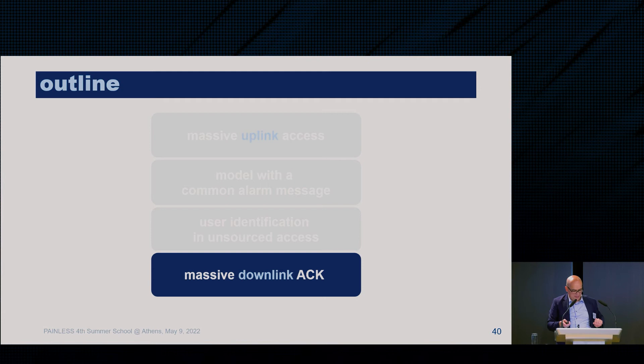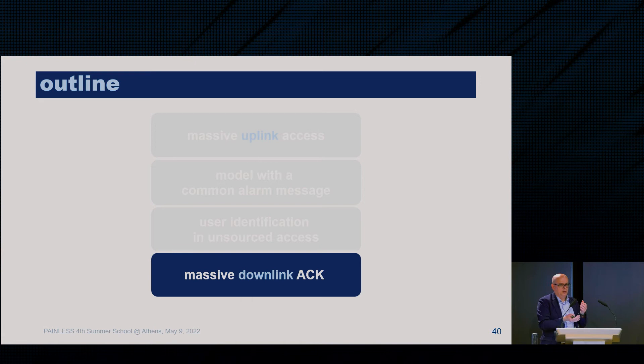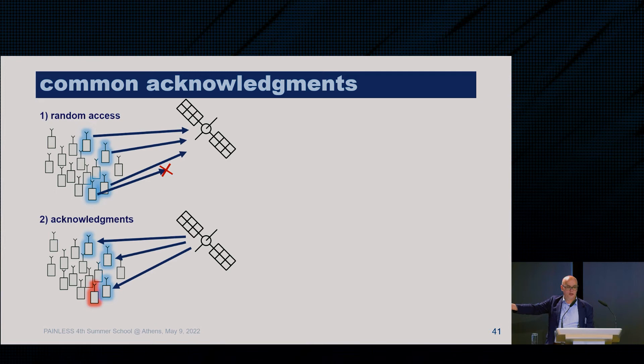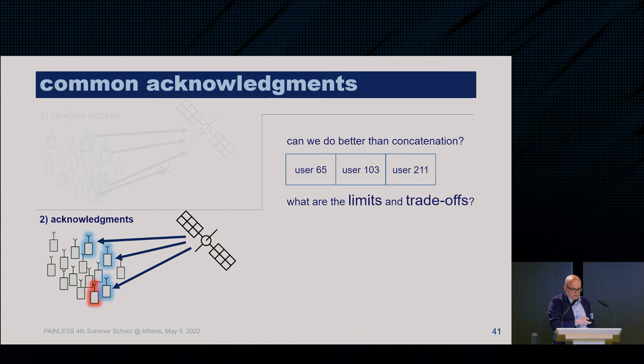What is Massive Downlink Acknowledgement? Our previous work and most massive access work focused heavily on the uplink — how to deal with interference, how to decode signals. But in any practical system, you have to send acknowledgement: you have to tell users the result of their transmission. So we have a first phase of random access and a second phase of acknowledgement, sending something back to users to indicate what happened.